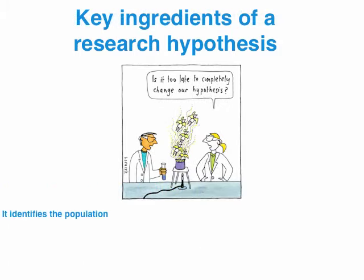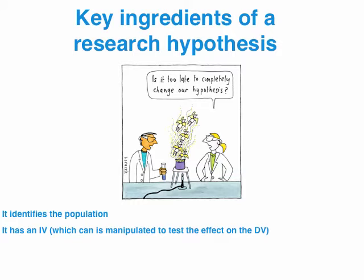The four key ingredients of a hypothesis: we've got to identify a population. Typically in a VCE scenario, that's going to be students from a certain secondary college or university. In the case of experiments on mental health patients, maybe it's people who have been diagnosed with depression, schizophrenia, or an anxiety disorder. The second ingredient is the IV, the independent variable, which is the one we manipulate.